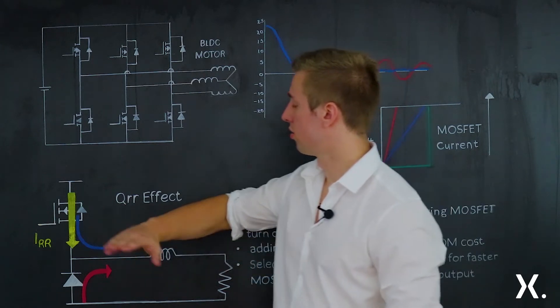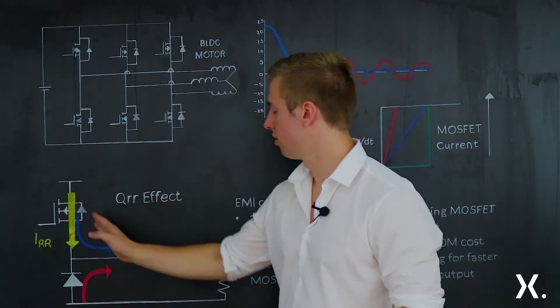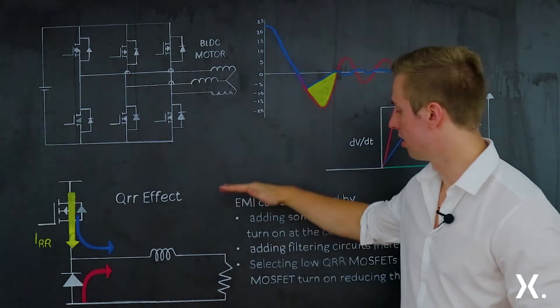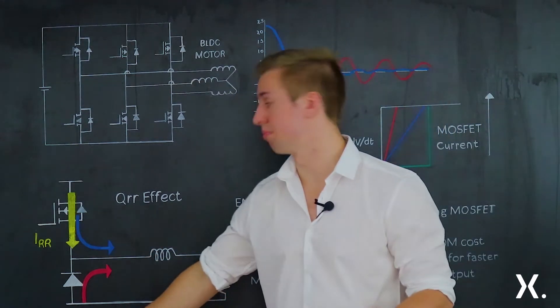Now initially when you turn on the high side you have the blue line which is the current flow flowing through the inductor, resistor and down through the ground path.